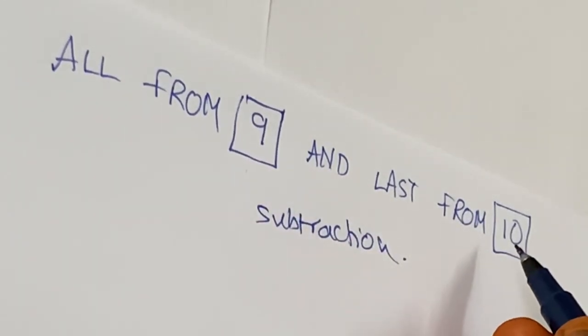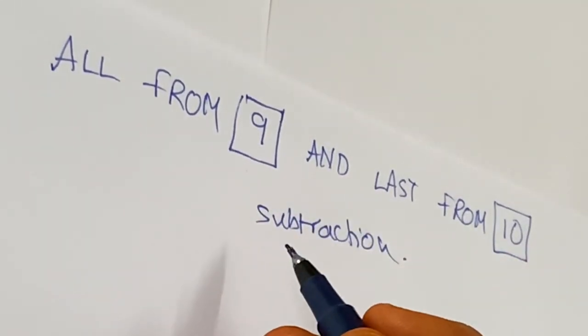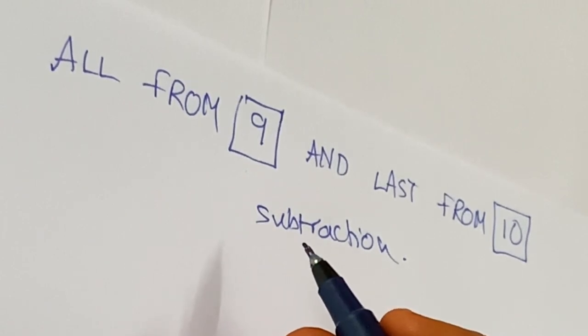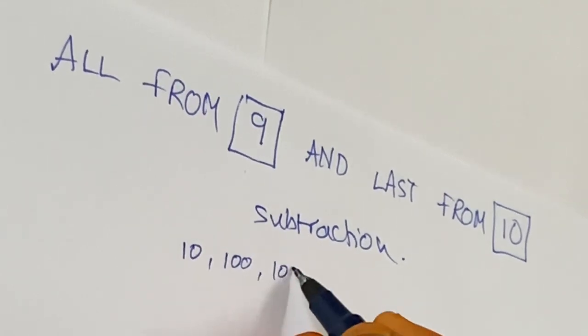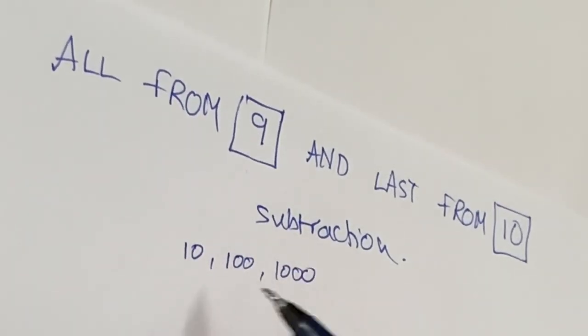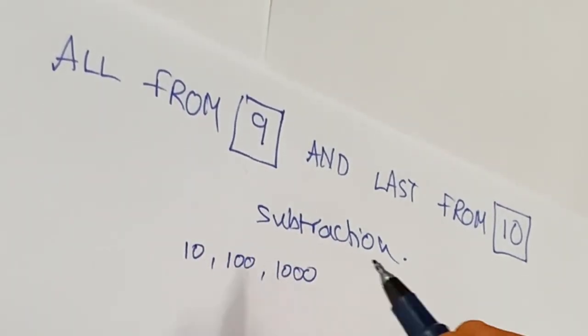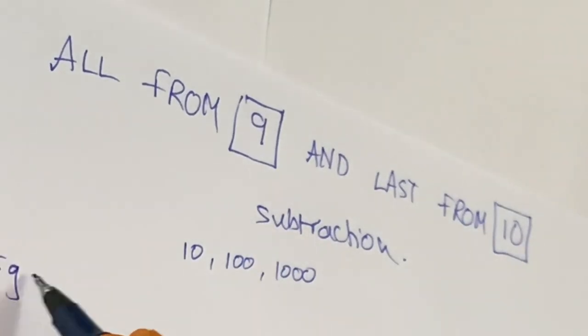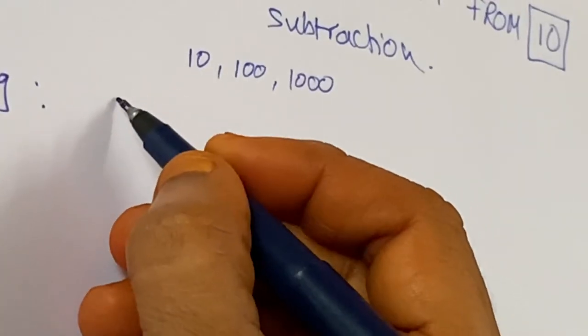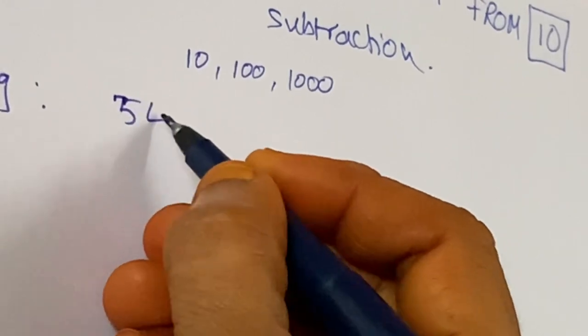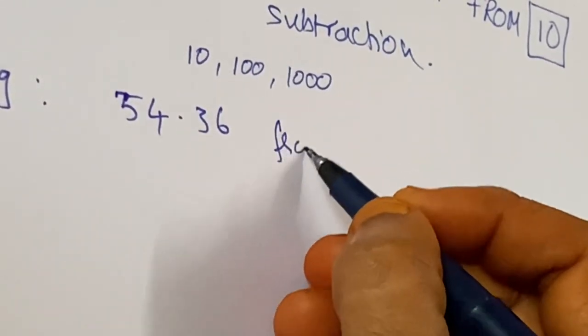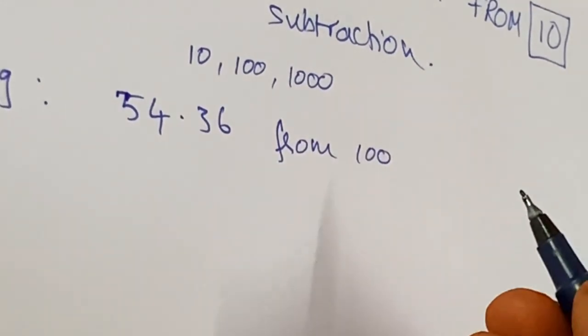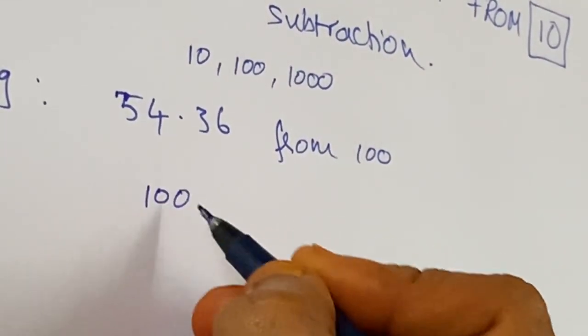We want to subtract power of tens like 10, 100, 1000. Subtraction of any number from these powers of 10. For example, subtract 54.36 from 100. In the traditional method, we write like this: 100 minus 54.36, then we subtract.